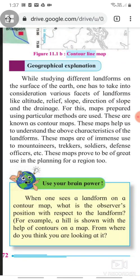Coming to geographical explanation, while studying different landforms on the surface of earth, one has to take into consideration various facets of landforms like altitude, relief, slope, direction of slope and the drainage. For this, maps prepared using particular methods are used. These are known as contour maps. These maps help us to understand the above characteristics of the landforms.